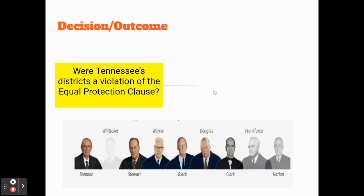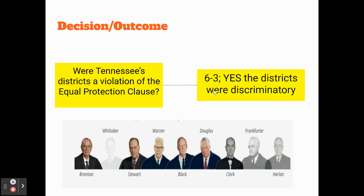So what is the actual question the court has to consider? Were Tennessee's districts, drawn with outdated census information, a violation of the Equal Protection Clause? The Supreme Court decided 6-3 yes — the districts were discriminatory. This was a victory for Baker, who was alleging that this was unfair.